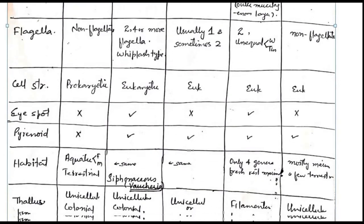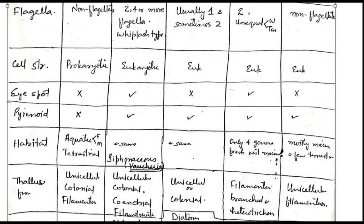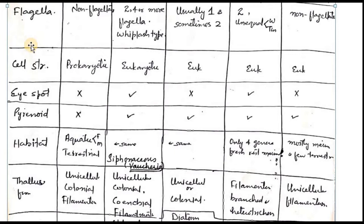There are different characters for classification. We have pigments, reserve food, cell wall, flagella, cell structure, eye spot, pyrenoid, habitat, and thallus form. We can classify algae on the basis of all of these. If you have an exam question asking what are the criteria by which you can classify, you can mention all these characters.